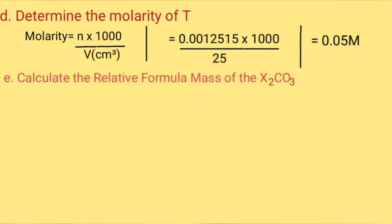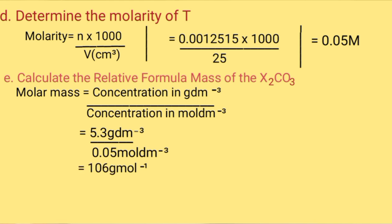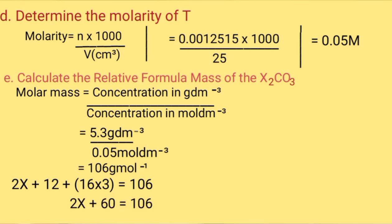Calculate the relative formula mass of X₂CO₃. Molar mass of X₂CO₃ equals concentration in g/dm³ divided by concentration in mol/dm³ = 5.3 g/dm³ divided by 0.05 mol/dm³ = 106 g/mol. To find the RAM of X: 2x + 12 + (16×3) = 106, so 2x + 60 = 106, then 2x = 46, therefore x = 23.